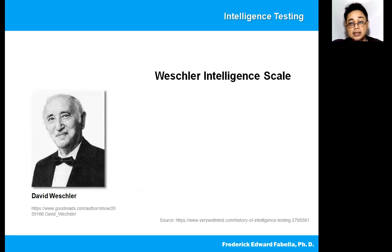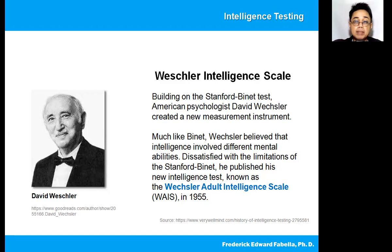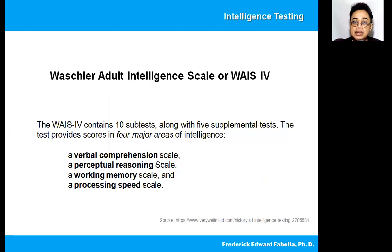Now let's go to another kind of intelligence test — the Wechsler Intelligence Scale, developed by David Wechsler. Building on the Stanford-Binet test, American psychologist David Wechsler created a new measurement instrument. Much like Binet, Wechsler believed that intelligence involved different mental abilities, but he was dissatisfied with the limitations of the Stanford-Binet scale. He published his new intelligence test, known as the Wechsler Adult Intelligence Scale, or WAIS, in 1955. The current version 4 contains 10 sub-tests along with 5 supplemental tests, and provides scores in 4 major areas of intelligence.